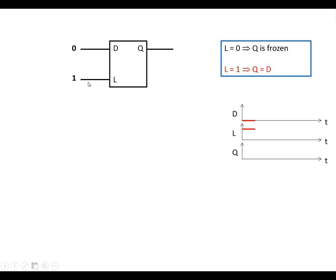In this first example, we've got L is high, which means that Q is going to copy whatever D is doing. So if D is low, Q is going to be low. We'll put this on the timing diagram. I'm going to make D go high, and because L is high, Q will also go high. I'll show that on the timing diagram.